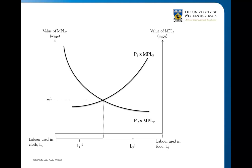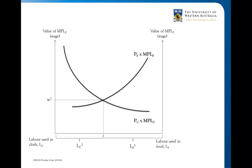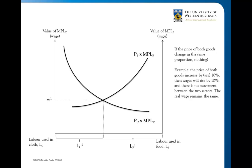Starting off with what we had before, there are two scenarios. The first one is not all that interesting but the second one is. In this first scenario, let's assume that the price of both goods changes in the same proportion — in that case, nothing happens.